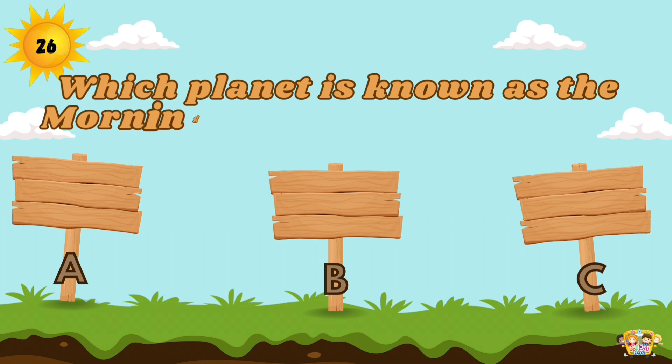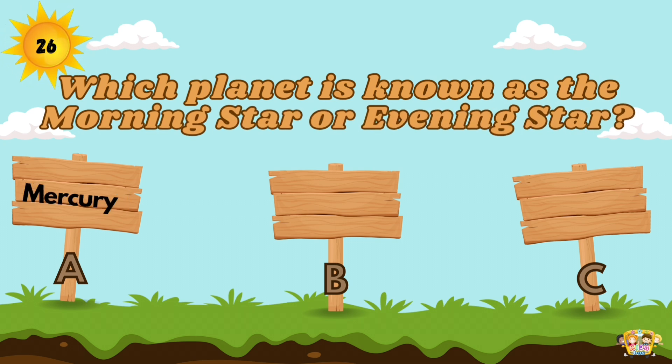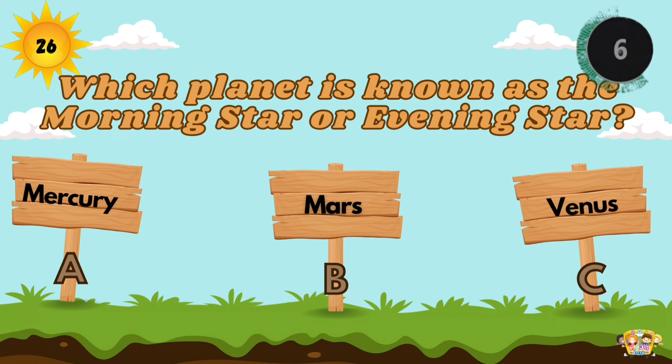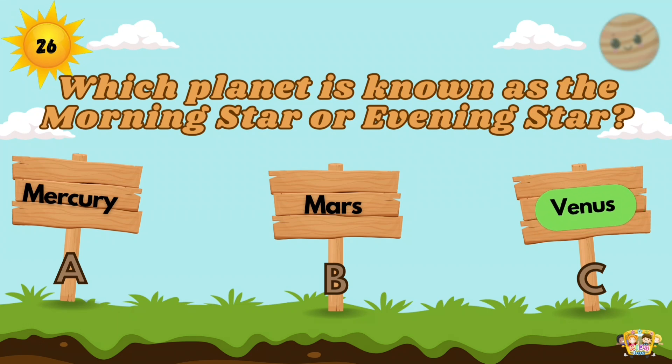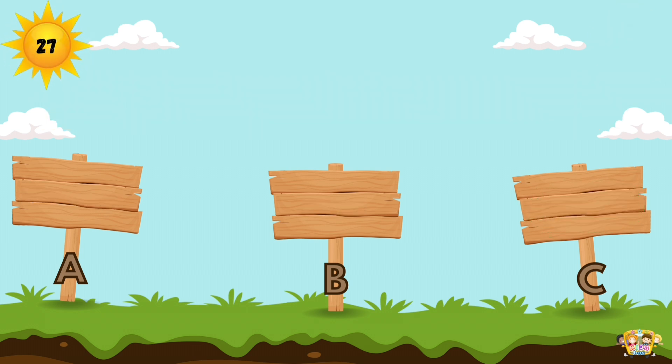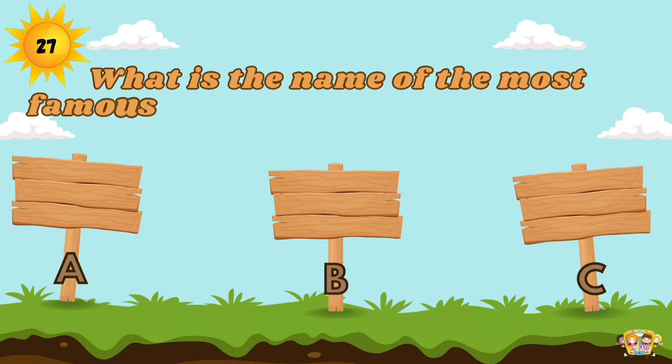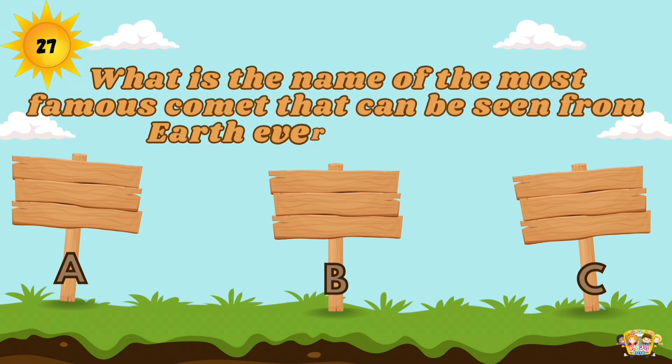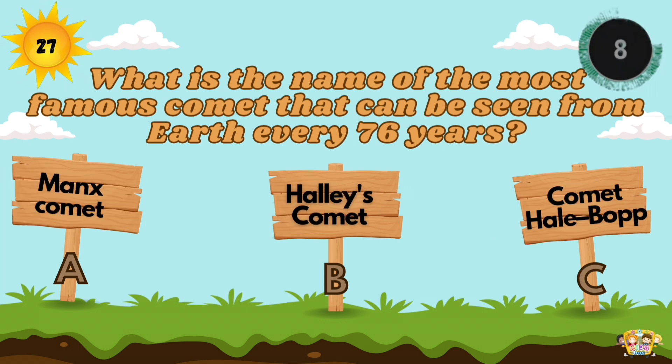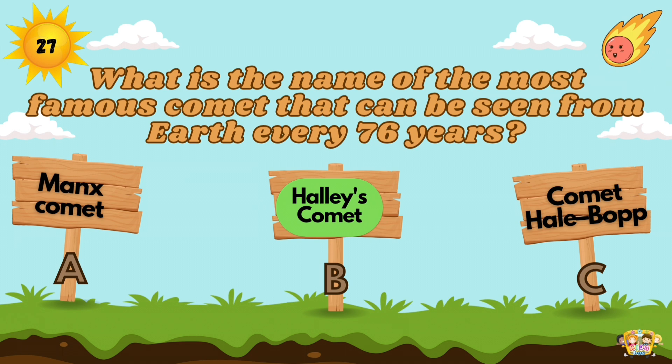Which planet is known as the morning star or evening star? Venus is the brightest planet in the night sky. Therefore, it is often called a morning or an evening star, although it is not a star. What is the name of the most famous comet that can be seen from Earth every 76 years? Halley's comet revolves around the Sun once in every 76 years.